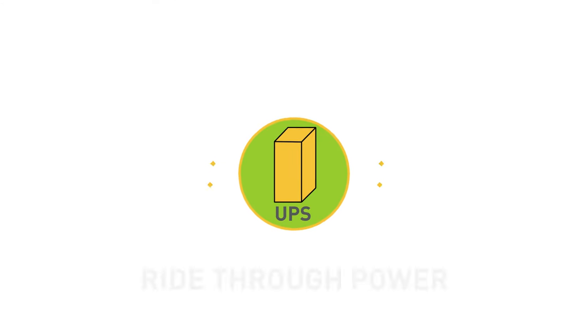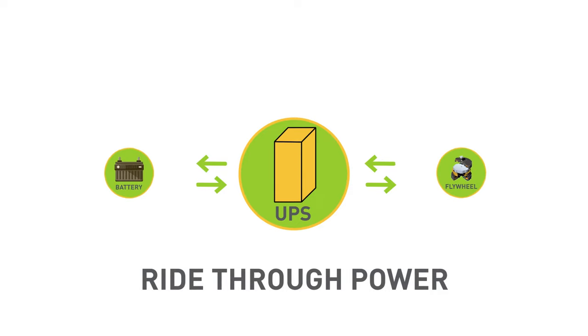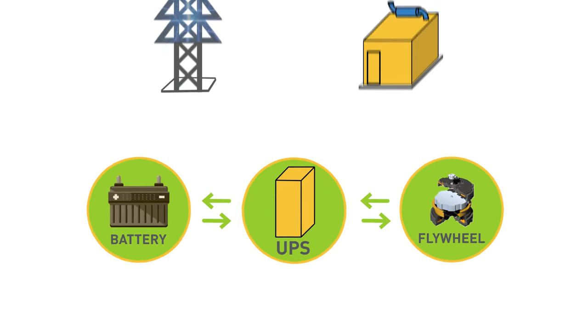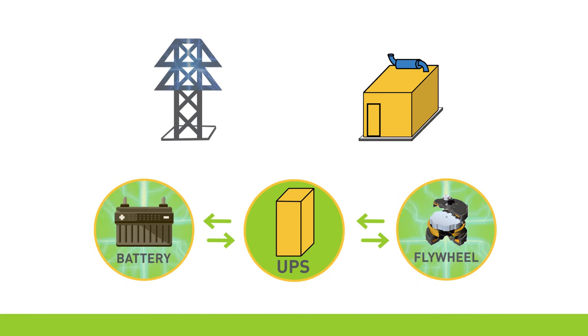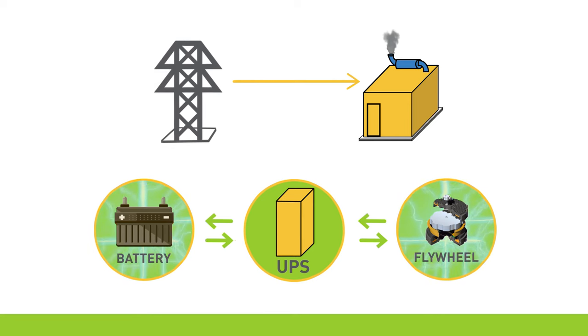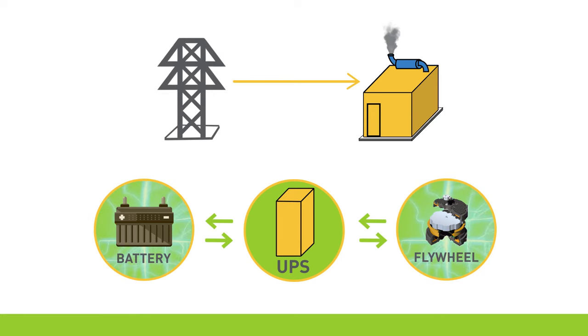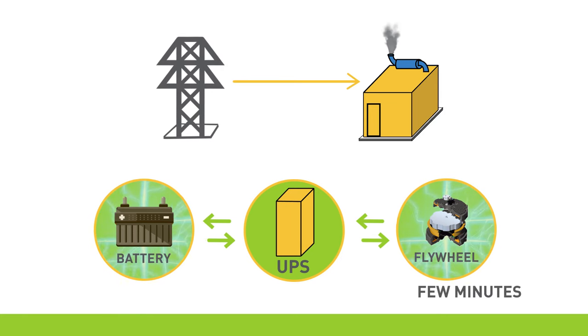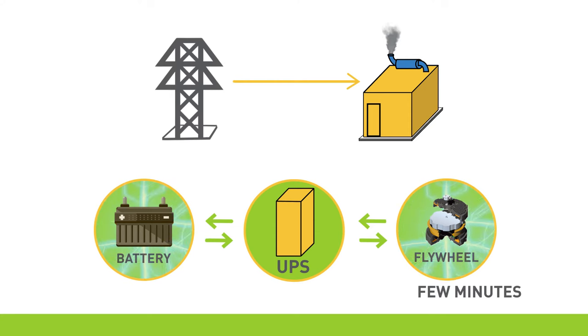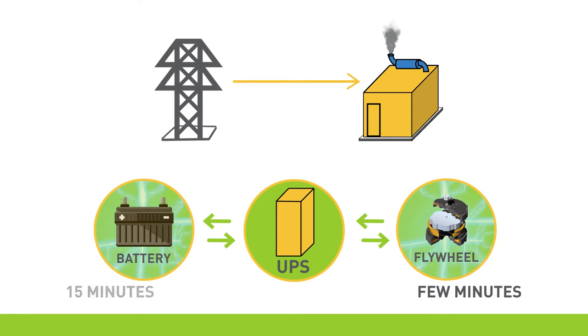The standby power provided by UPSs is known as ride-through power and can be either a battery or flywheel system. Both systems store a specified amount of energy to span the time between utility power outage and generator power startup. The flywheel UPSs, when used in series, can generally generate sufficient power for at least a few minutes. Battery systems can provide power for longer durations of 15 minutes or more. There are benefits and drawbacks with both types of systems.